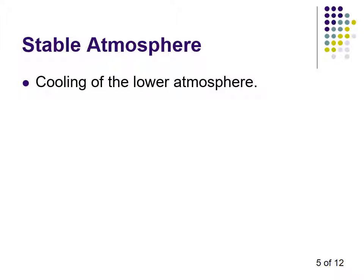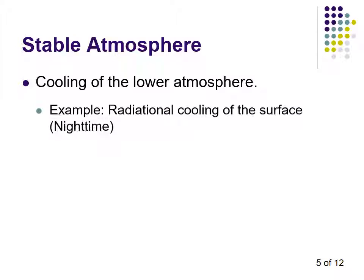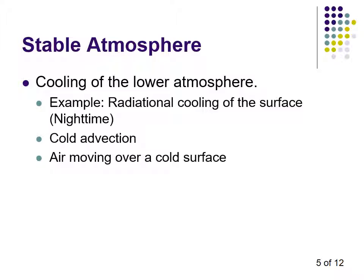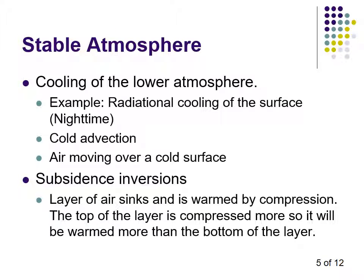Ways of getting a stable atmosphere include cooling the lower atmosphere through radiational cooling of the surface, cold advection bringing cold winds into the lower surface layer, or moving air over a cold surface. We can also have what's called a subsidence inversion — a layer of air that sinks and is warmed by compression. The top of the layer is compressed more, so it warms more than the bottom, making the top layer warmer than the bottom layer.